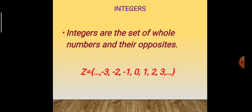Next, integers. Integers are the set of whole numbers and their opposites. Z = {..., -3, -2, -1, 0, 1, 2, 3, ...}. These are also all rational numbers.